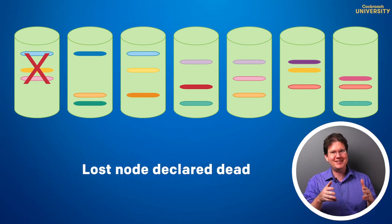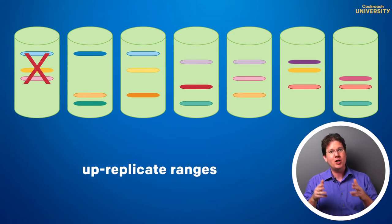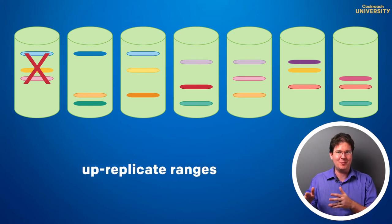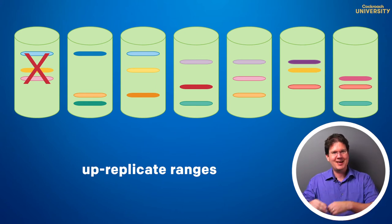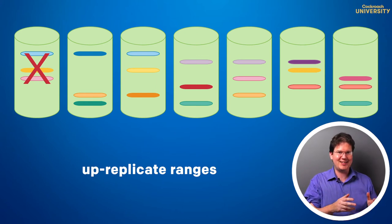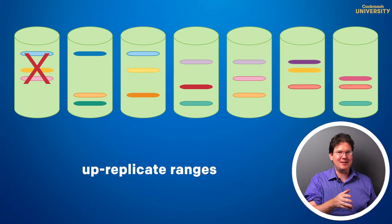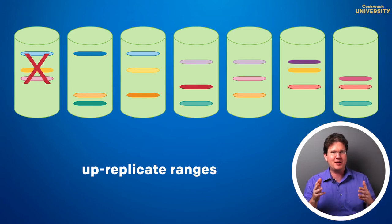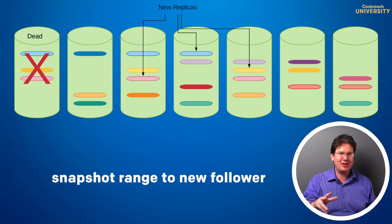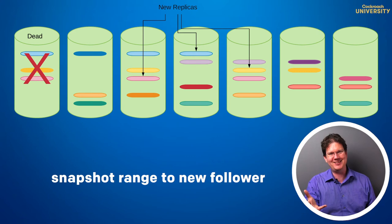the cluster will heal itself by up-replicating the under-replicated ranges to other nodes that don't yet have them, and go from this state to something like this state. That node might be dead, but new replicas are put on the other nodes, with each starting out by taking a consistent snapshot of the range before becoming a follower. At that point,